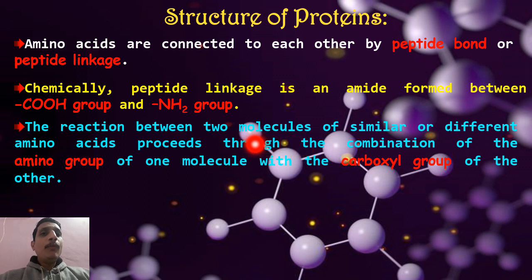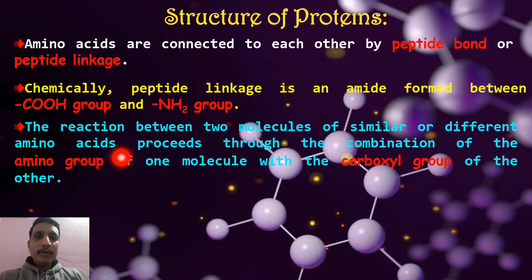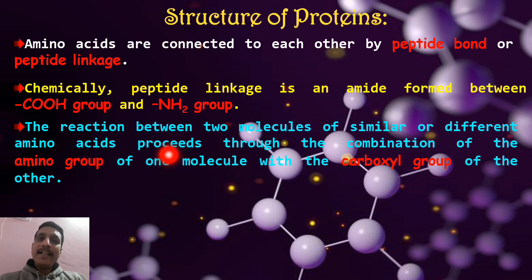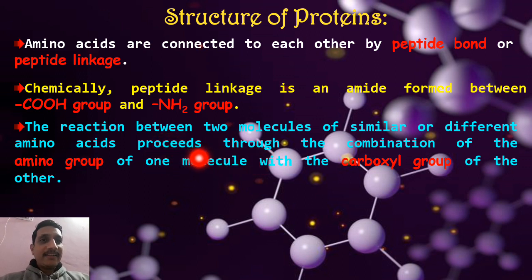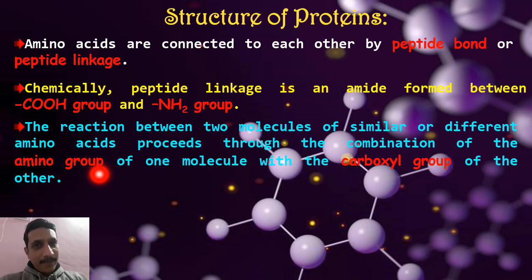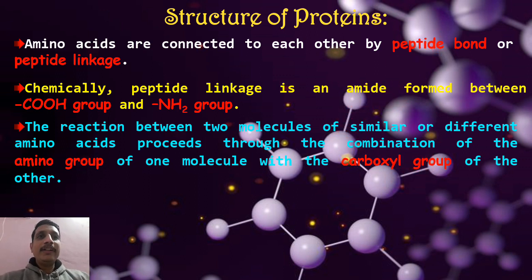The reaction occurs between two molecules of similar or different amino acids. The reaction proceeds through the combination of the NH₂ group of one molecule with the carboxyl group of the other molecule. The NH₂ group of one amino acid reacts with the COOH group of another amino acid, forming an amide linkage that we call a peptide linkage.